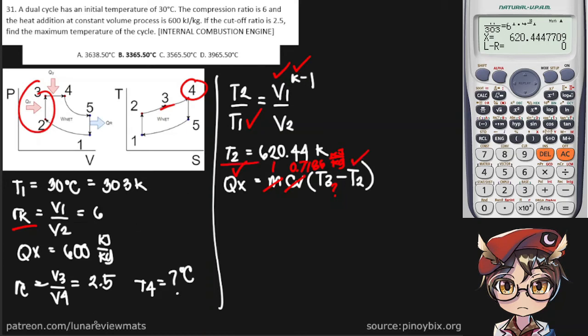And we can start putting this in our calculator. Qx is 600. Cv is 0.7186. We're trying to find T3.